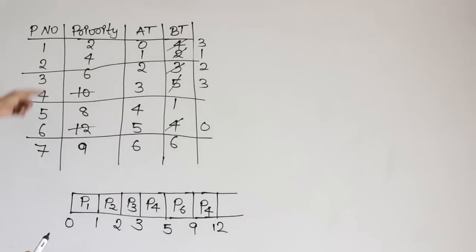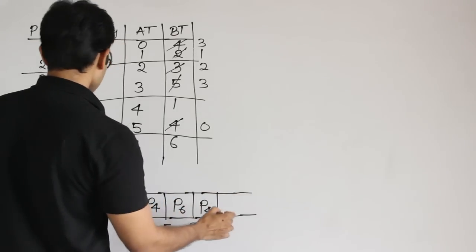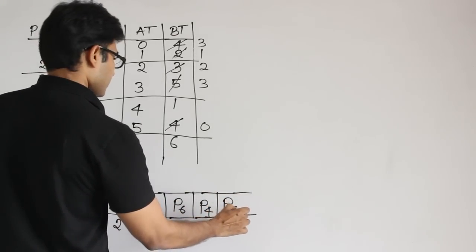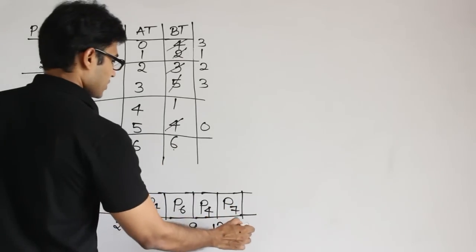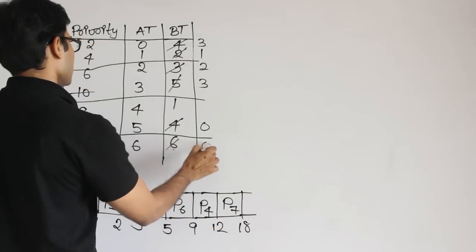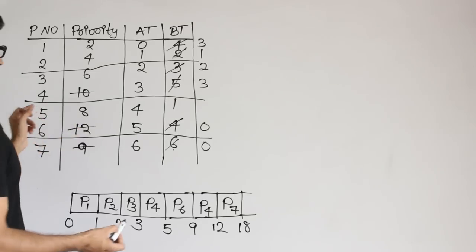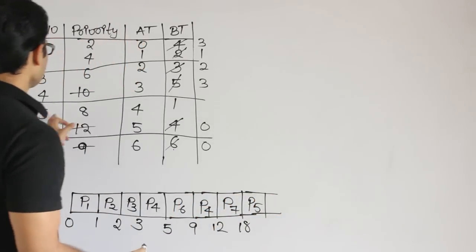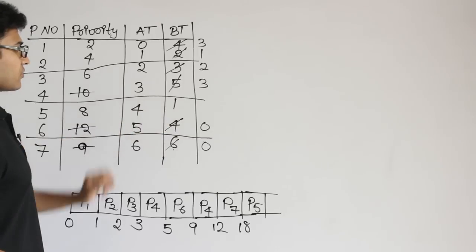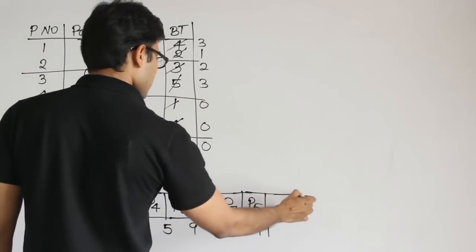After P4, the next available highest priority is 9, which is P7. Schedule P7 and run it till completion — 6 units, therefore till time 18. Among the remaining, next highest is 8, which is P5. P5 has never been scheduled before, so its burst time is the full 1 unit. Run it till completion, therefore till time 19.